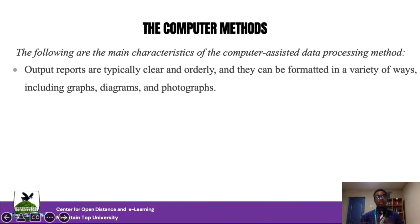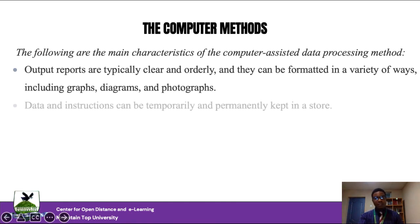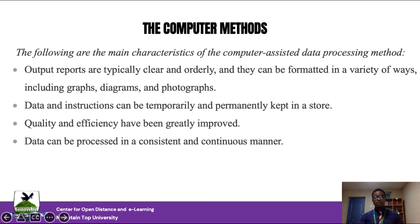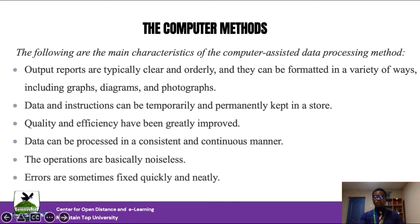Then we have the computer method. In this case, a machine has a central processing unit responsible for processing information without human influence. Output reports are clearer, orderly, and can be formatted automatically using graphs, diagrams, and photographs. Data and instructions can be stored temporarily and permanently. Computers have greater capacity to store and retain information than humans, don't get tired, don't forget, don't get worried or emotionally disturbed. Data can be processed consistently, errors were reduced drastically, and operations became noiseless.